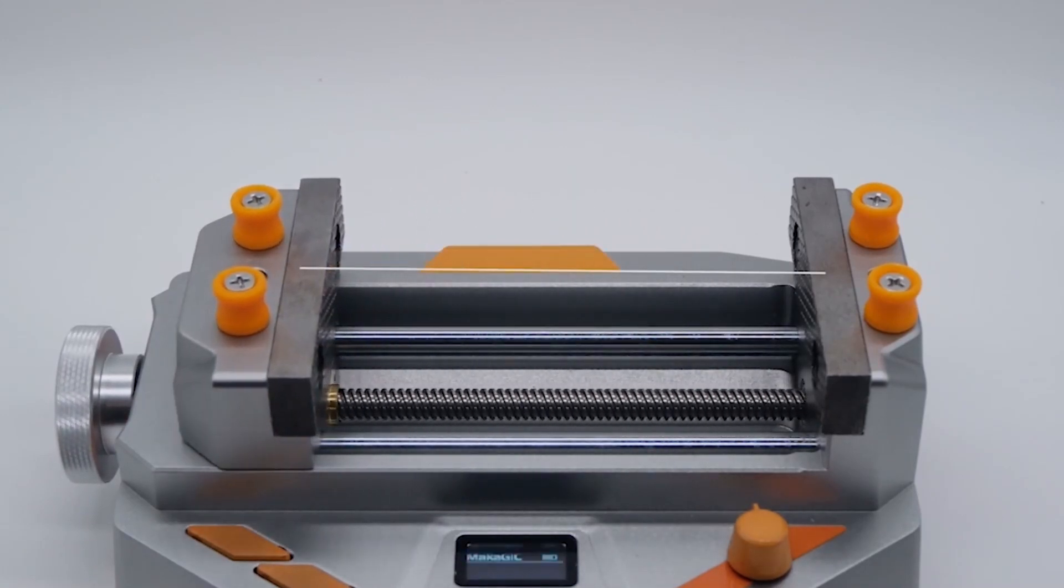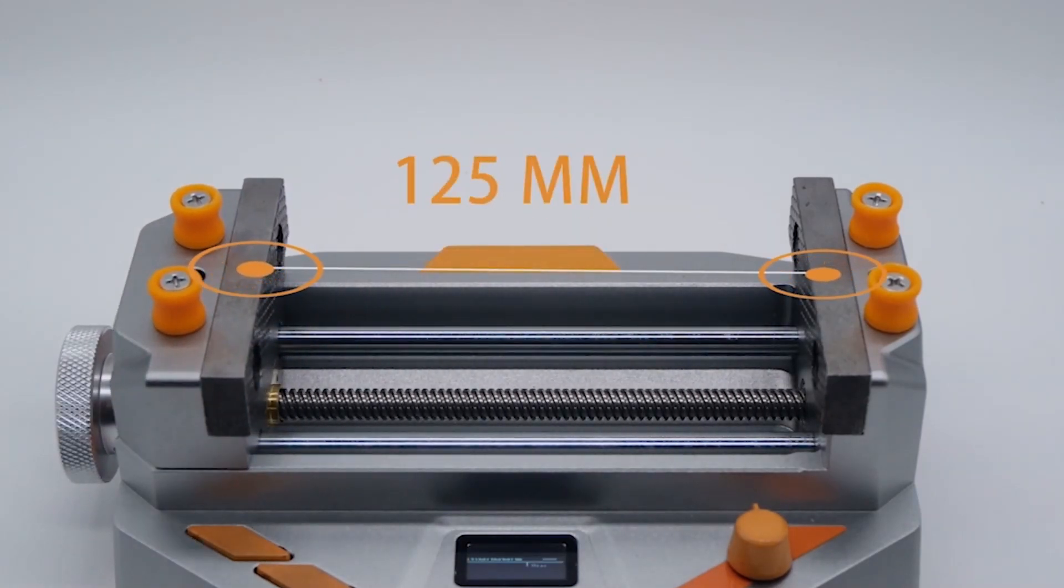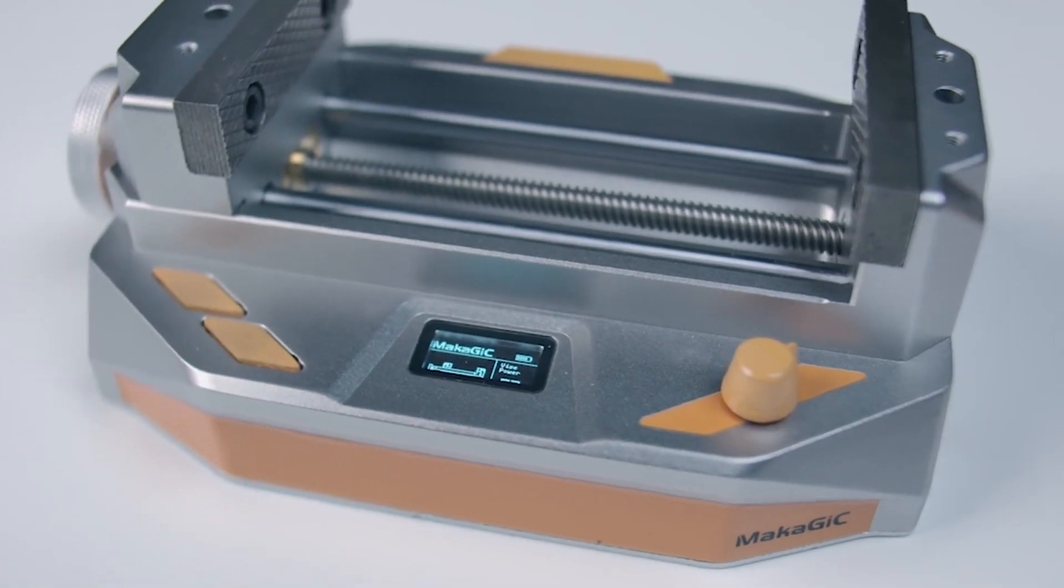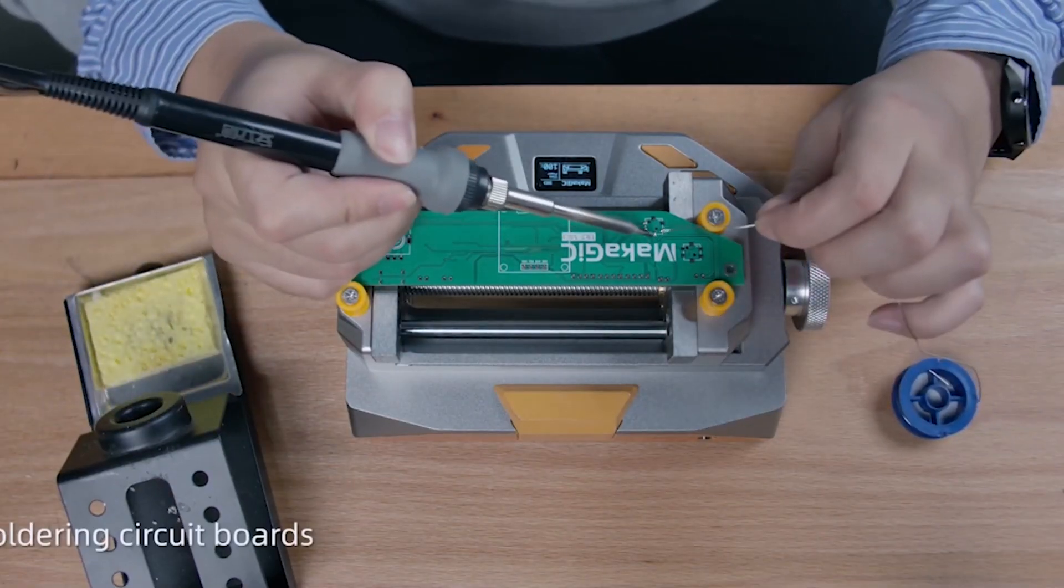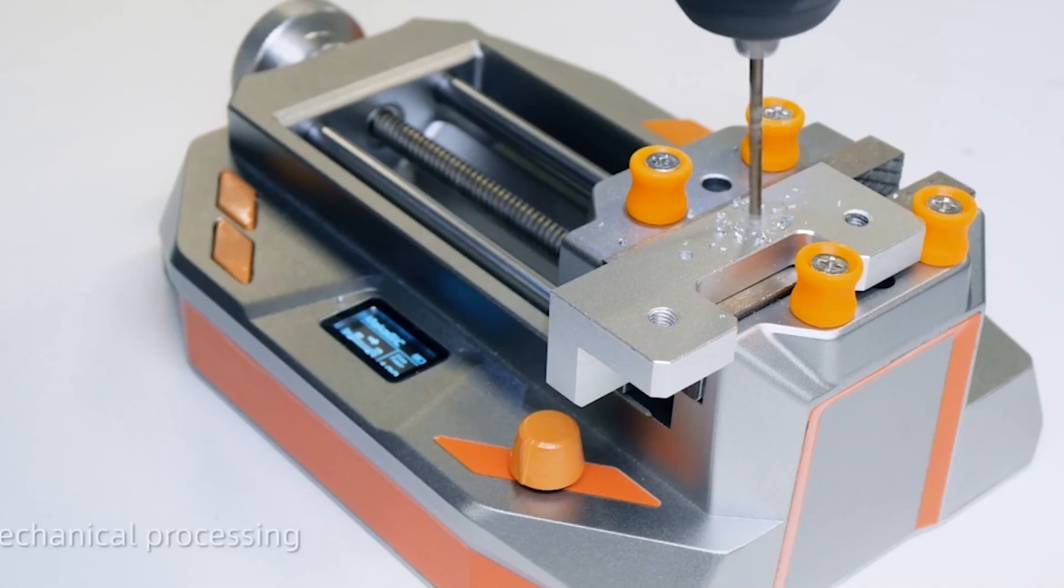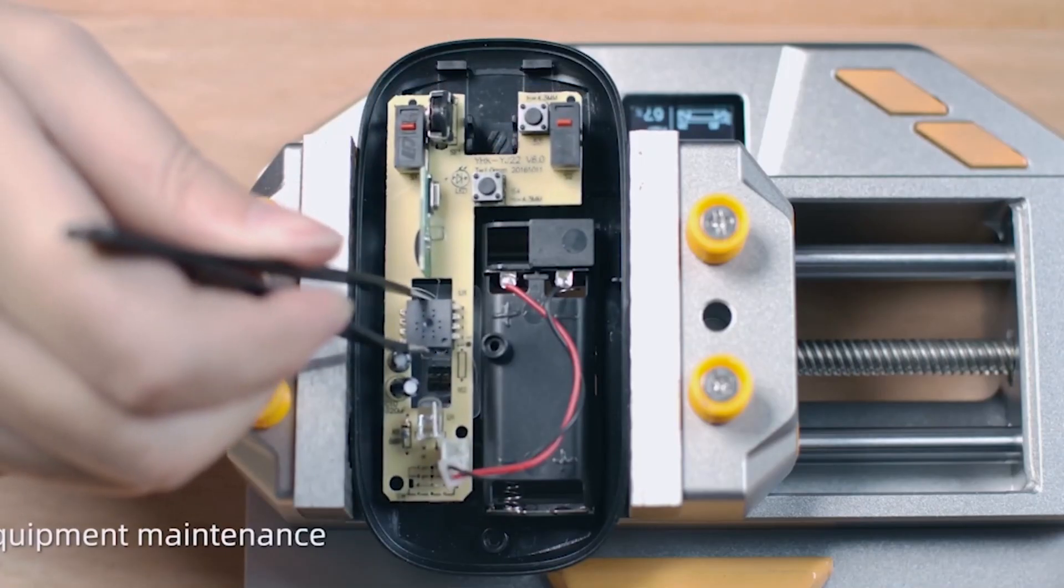Its clamping distance is up to 125mm. Makajik can adapt to most of the daily clamping work, whether it is soldering circuit boards or woodworking carving, mechanical processing, equipment maintenance, and so on.